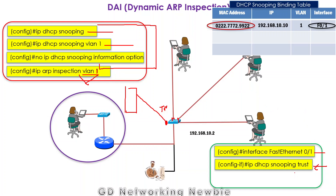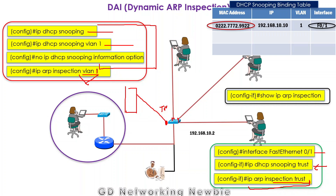We can also designate one of the interfaces as a trusted interface using the appropriate command in Cisco Packet Tracer. Finally, to verify the configuration, we can use the 'show ip arp inspection' command.